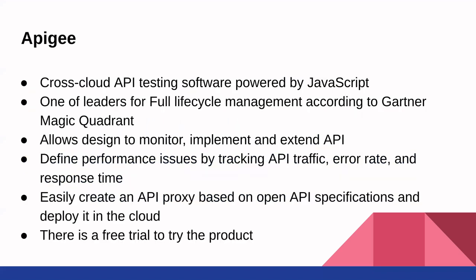The fourth tool on our list is Apigee. Apigee is a very interesting cross-cloud API testing software powered by JavaScript. This tool has been named one of the leaders in the 2019 Gartner Magic Quadrant for full lifecycle API management four times in a row. Apigee allows developers and testers to access its features via different editors. This tool is compatible with APIs that contain large amounts of data, making it ideal for robust and complex digital businesses. Plus, it is able to easily identify issues that are compromising performance by analysing the API traffic, response times and potential error rates. Moreover, Apigee also enables the creation of proxies from open API specifications.